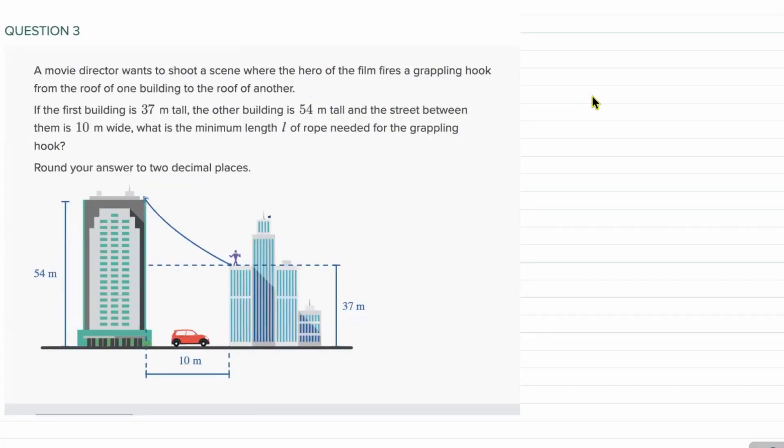A movie director wants to shoot a scene where the hero of the film fires a grappling hook from the roof of one building to the roof of another. If the first building is 37 meters tall, the other building is 54 meters tall, and the street between them is 10 meters wide, what is the minimum length L of rope needed for the grappling hook? Round your answer to two decimal places.